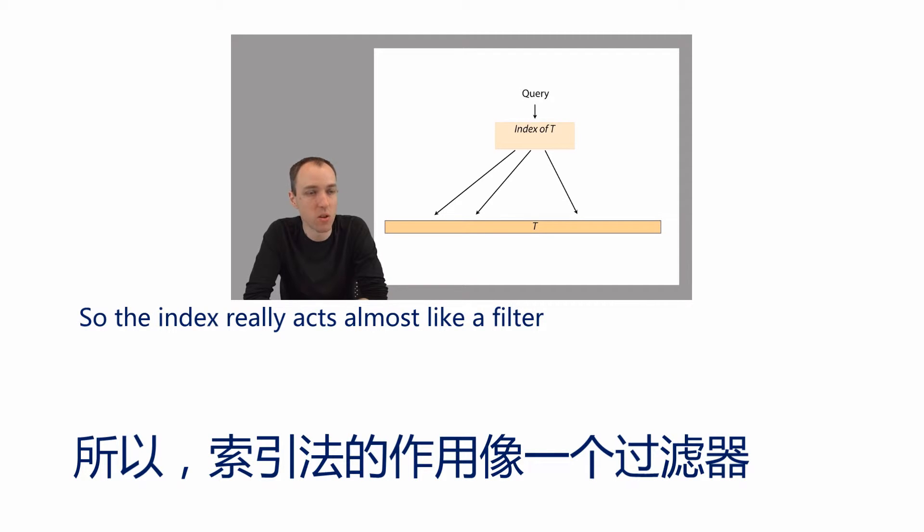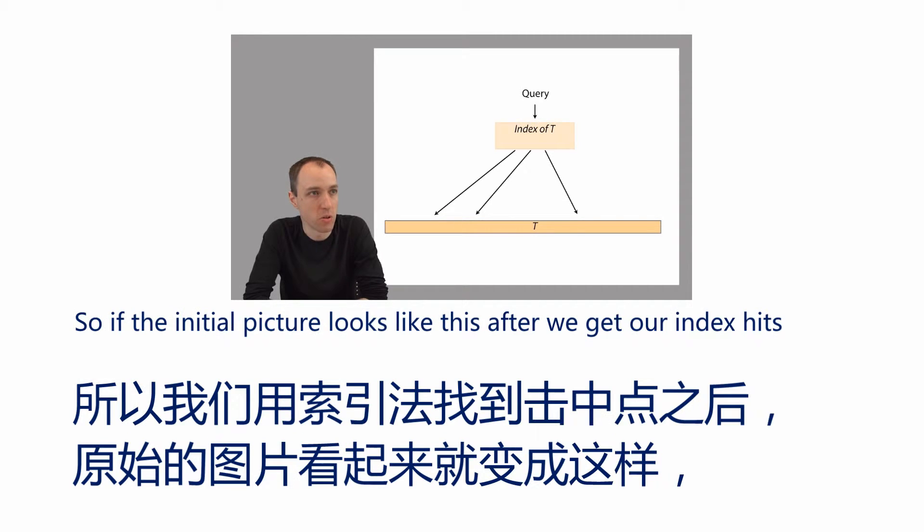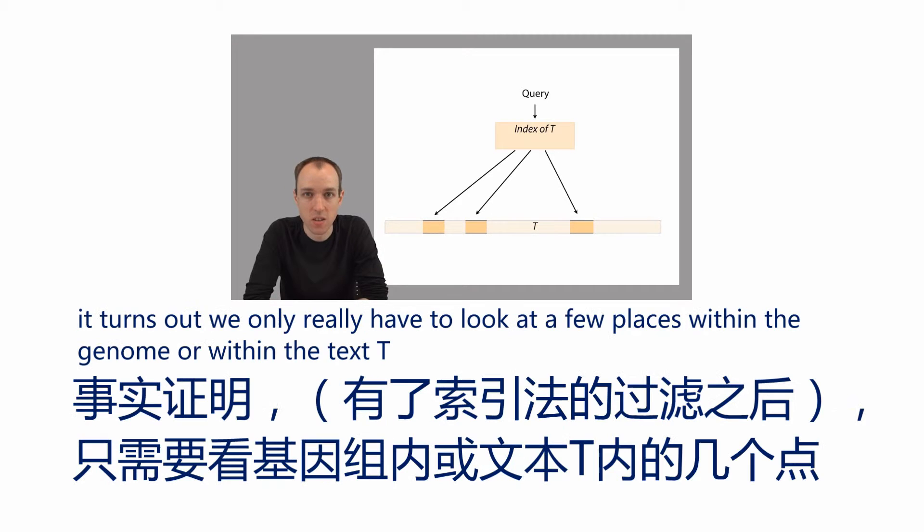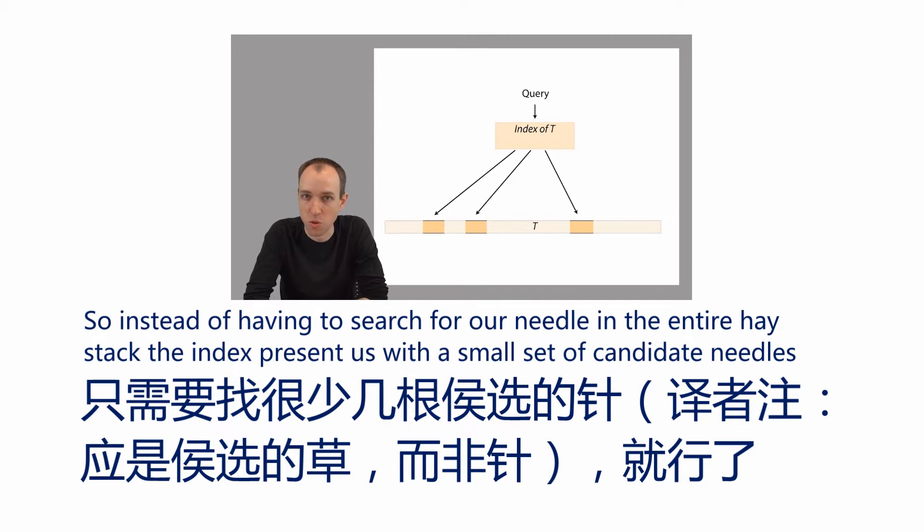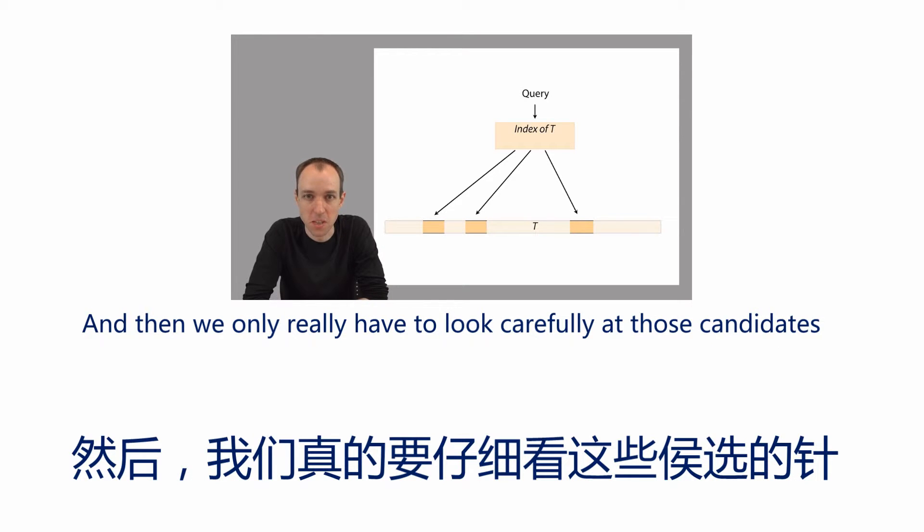The index really acts almost like a filter. If the initial picture looks like this, after we get our index hits, it turns out we only really have to look at a few places within the genome or within the text T. Instead of having to search for our needle in the entire haystack, the index presents us with a small set of candidates, and then we only have to look carefully at those.